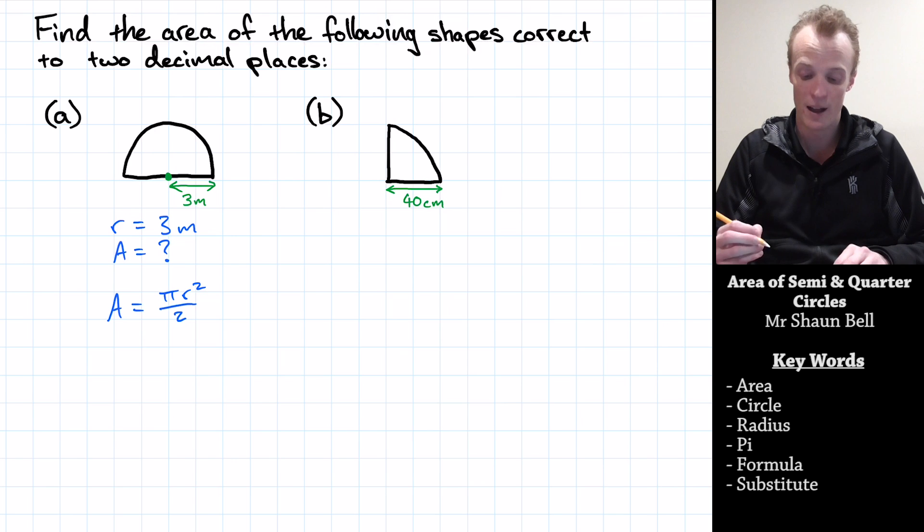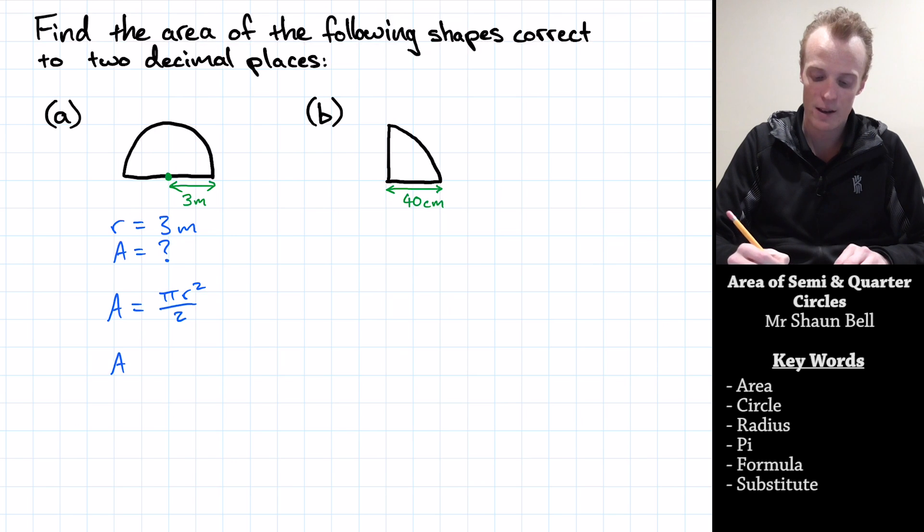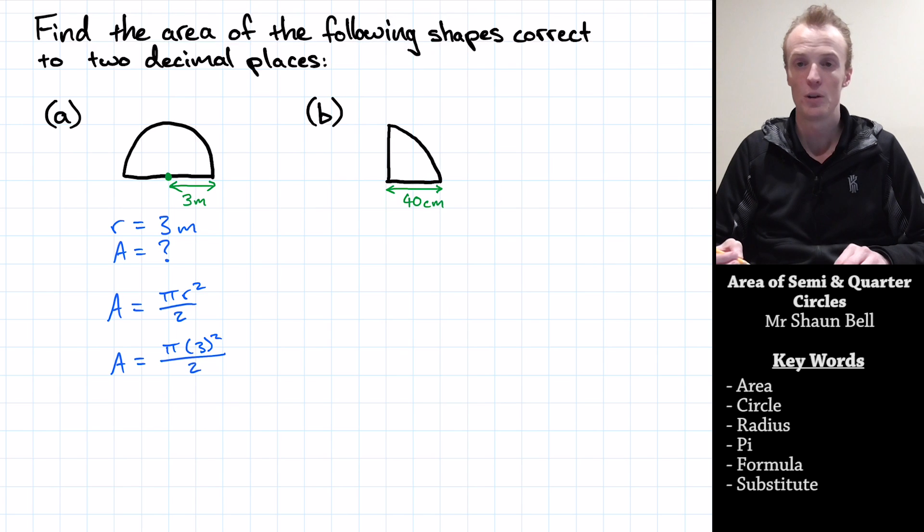Next, I substitute the values that I have. So the area is going to be equal to pi times the radius of three squared, all divided by two.